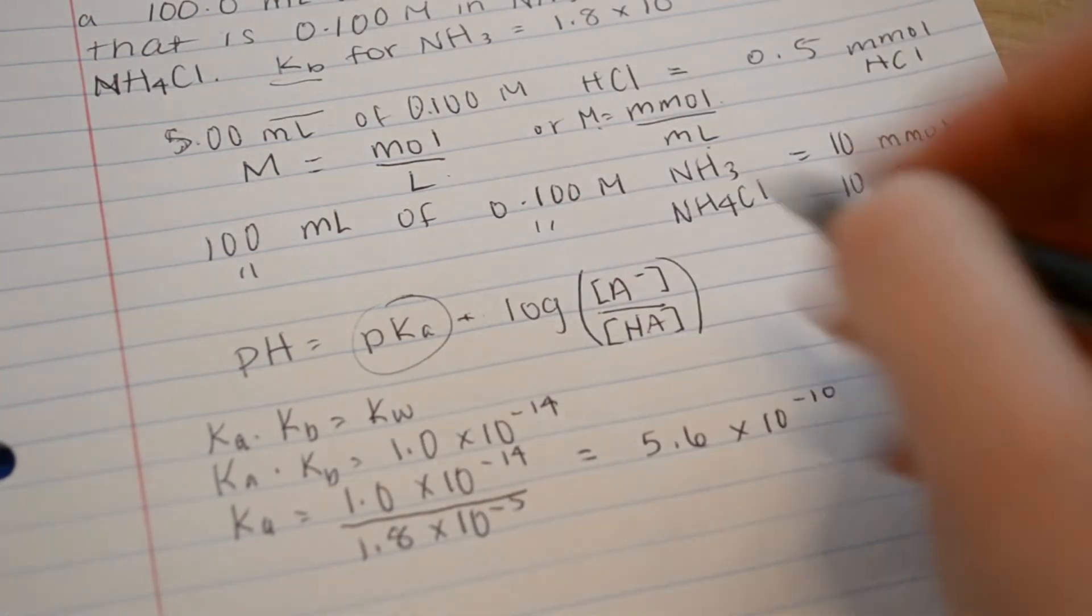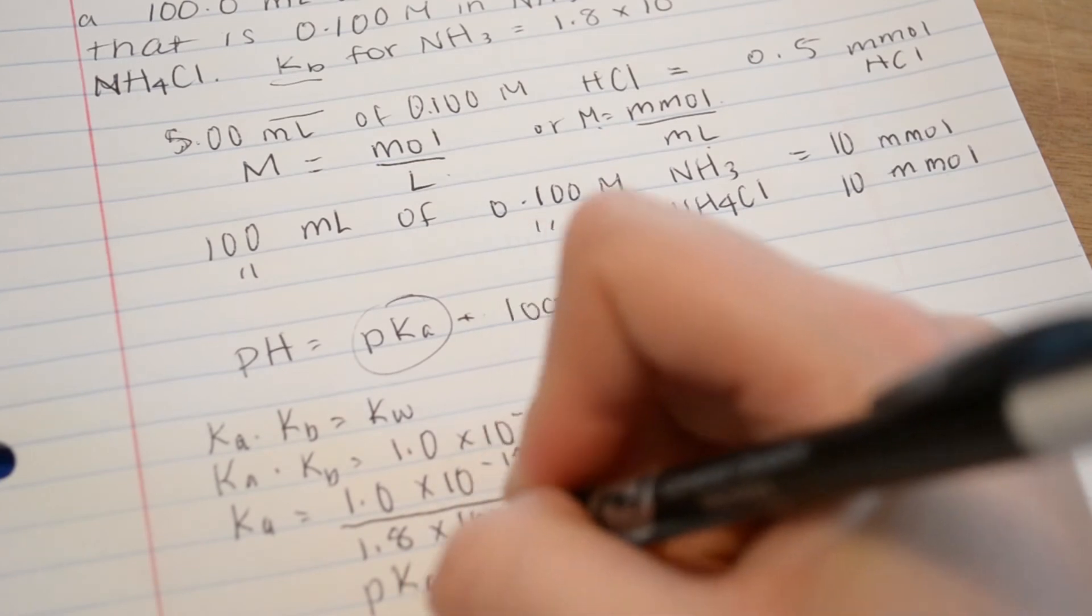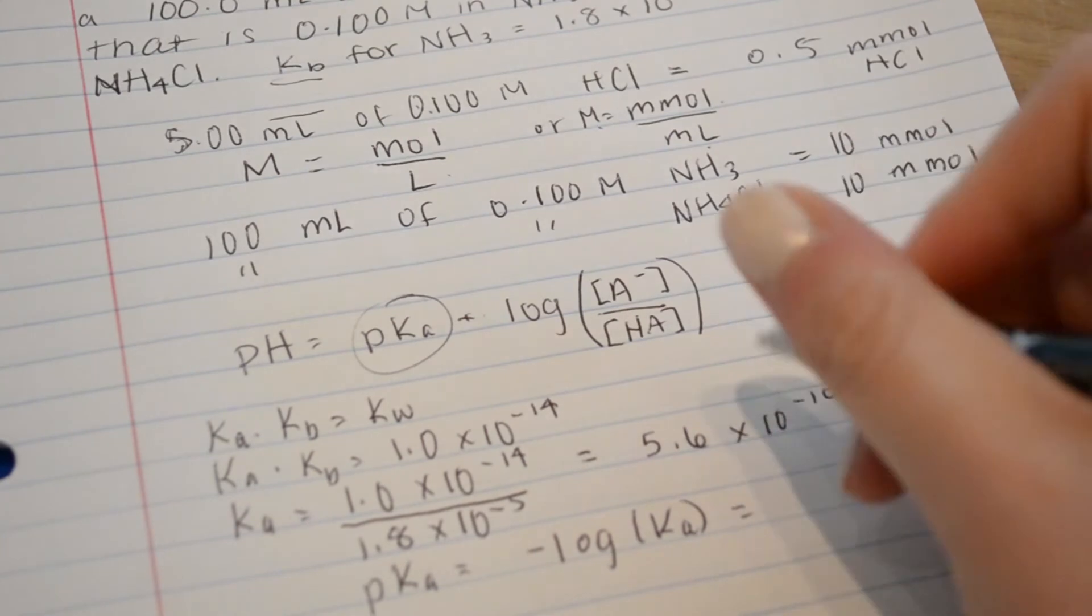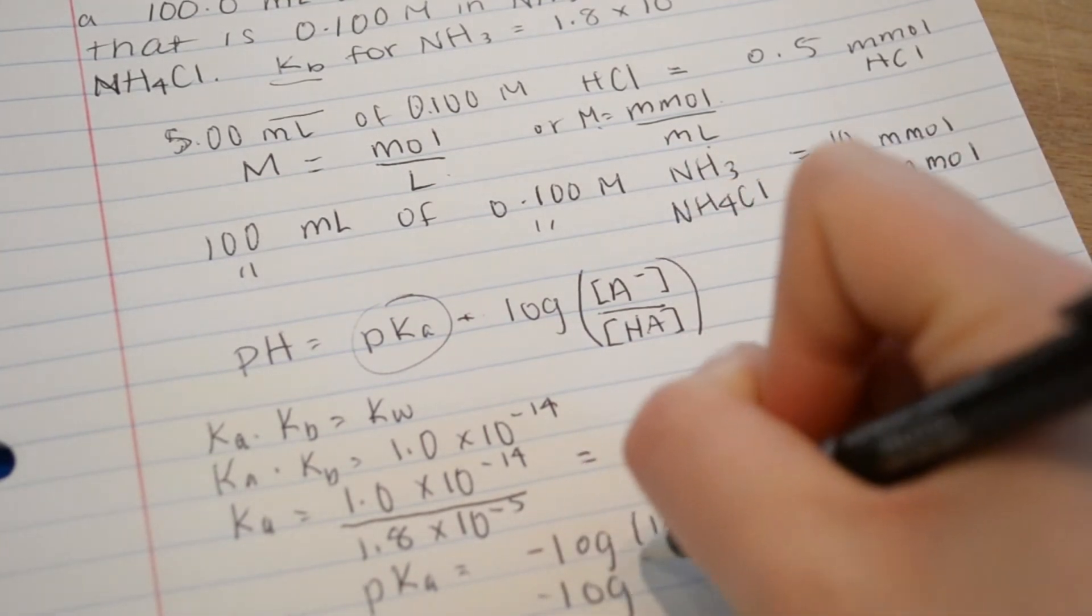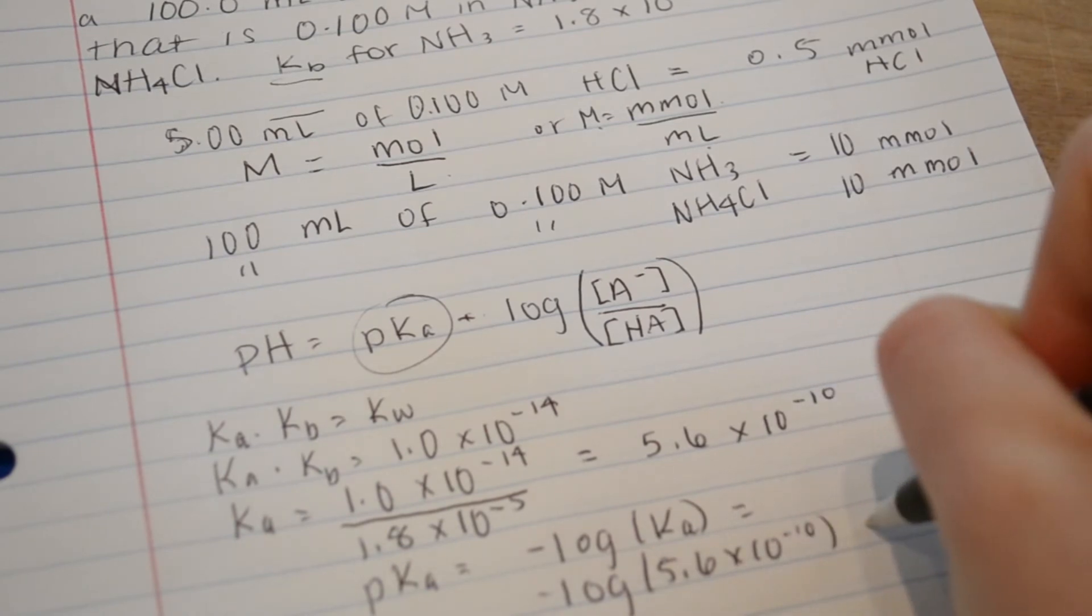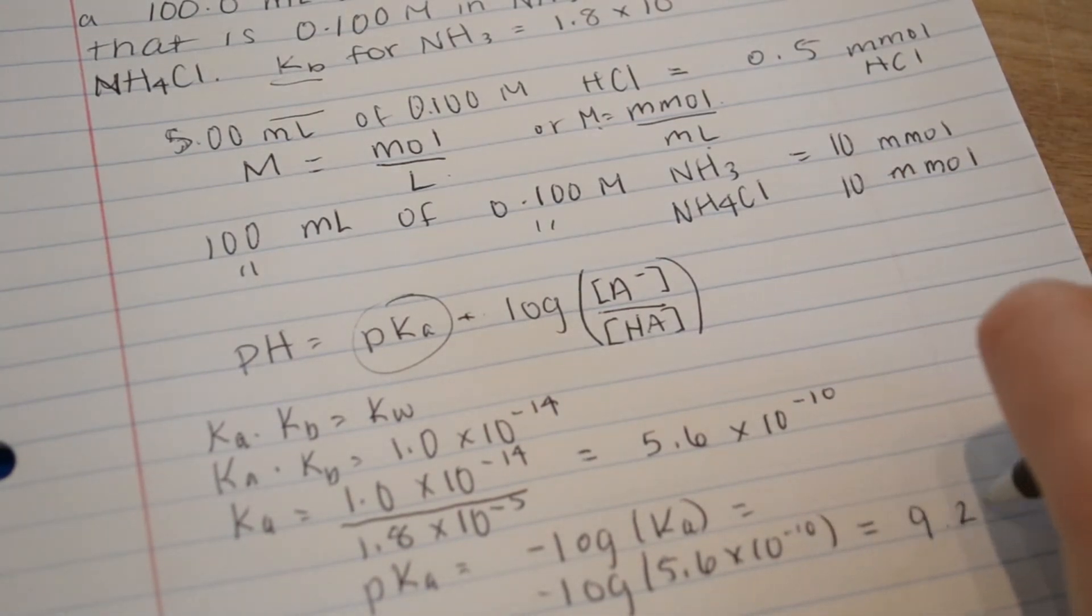And to find pKa, we take the negative log of the KA, which will give us negative log of 5.6 times 10 to the negative 10th, which equals 9.25.